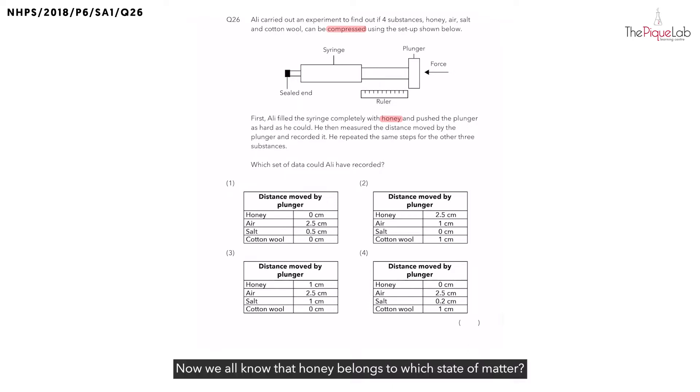Now, we all know that honey belongs to which state of matter? We know that honey is in the liquid state. And remember, liquids, can they be compressed? No, and why is that? Because liquids, they have a definite volume, which means that it cannot be compressed. Now, since the honey cannot be compressed, this means that no matter how hard Ali pushes the plunger, would the plunger be able to move?